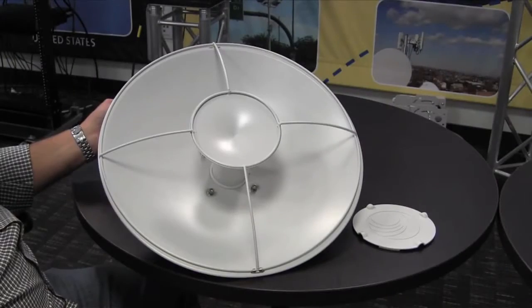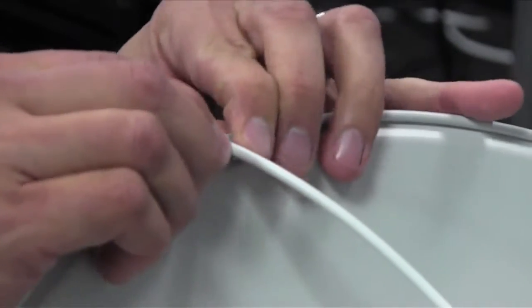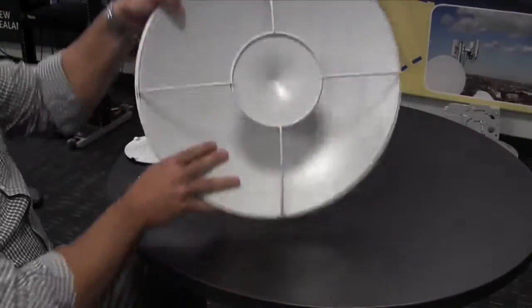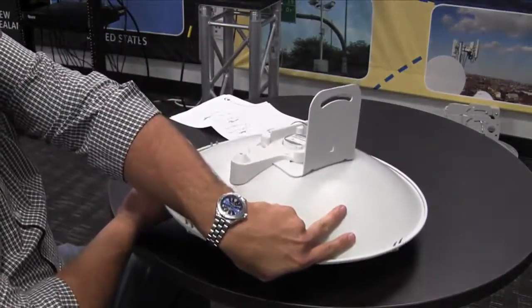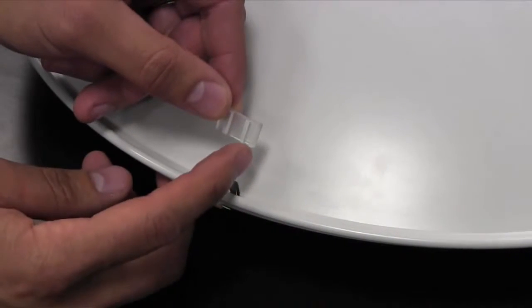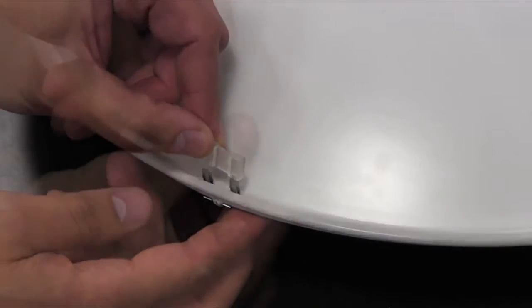Use the four retaining clips to attach the sub-reflector to the assembly. Flip the assembly over. Attach the retaining clip covers to the retaining clips with the little notch facing outward from the dish.